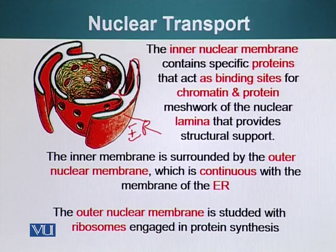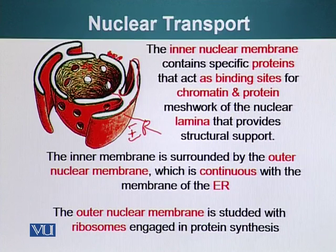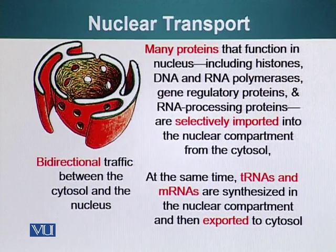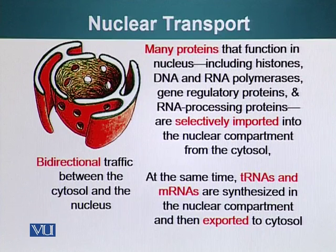The outer nuclear membrane is studded with ribosomes engaged in protein synthesis, and these proteins will be injected into the inner membranous space of the nucleus. Through the nuclear pore there is bidirectional traffic between the cytosol and the nucleus. Many proteins that function in the nucleus — including histones, DNA and RNA polymerases, gene regulatory proteins, and RNA processing proteins — are selectively imported into the nuclear compartment from the cytosol.